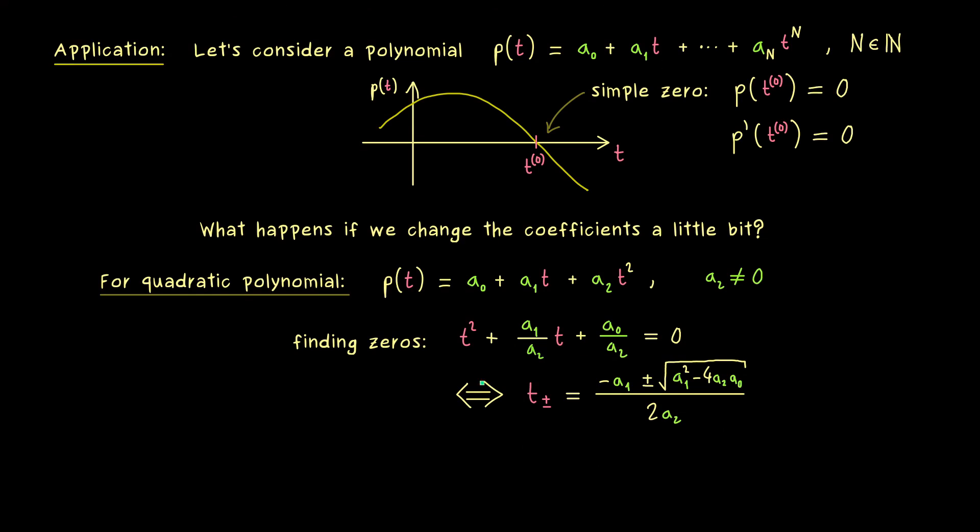However if we assume that we have a simple zero here in the real numbers then we also see what happens if we change the coefficients a little bit. So if we wiggle the coefficients in a C∞ sense the zero will also change in a differentiable way. This is simply because the coefficients go into a C∞ function here. However we cannot say that for a general polynomial because we don't have a formula for the zeros in the general case.